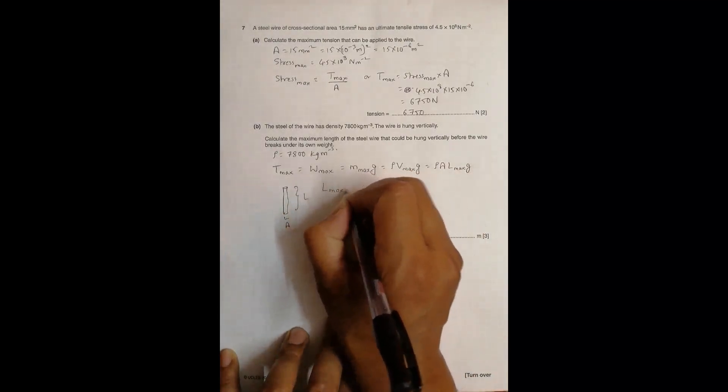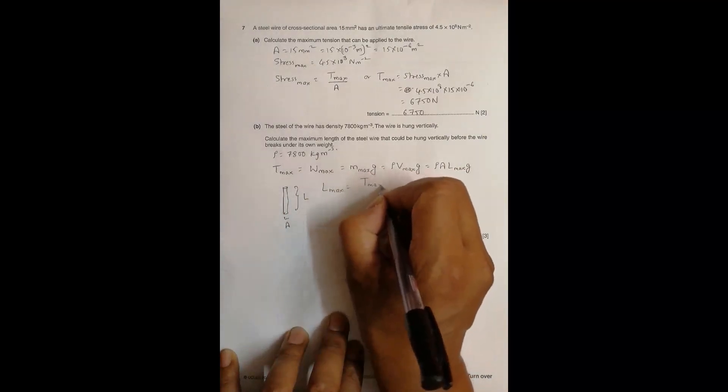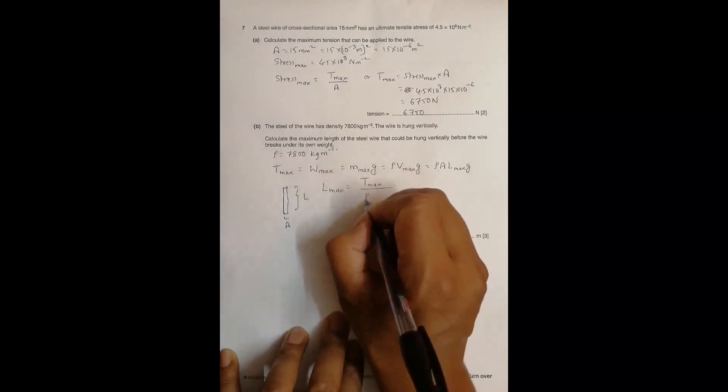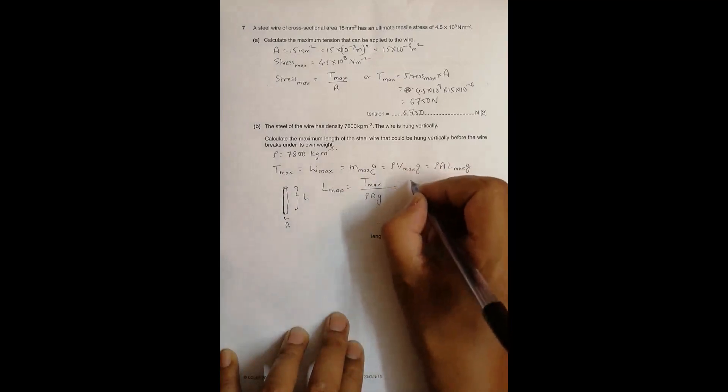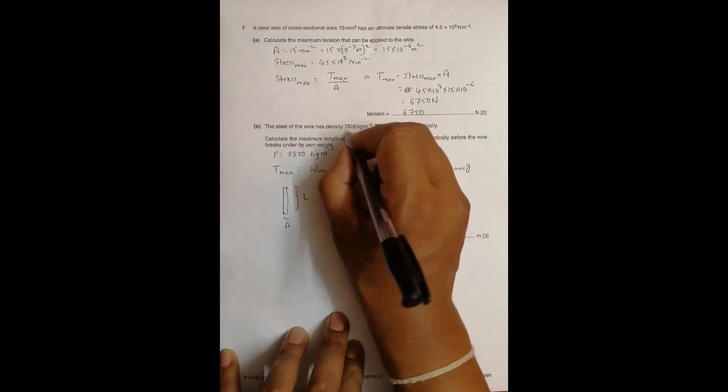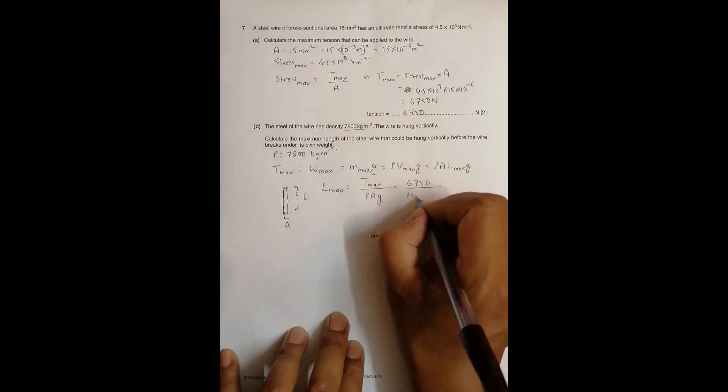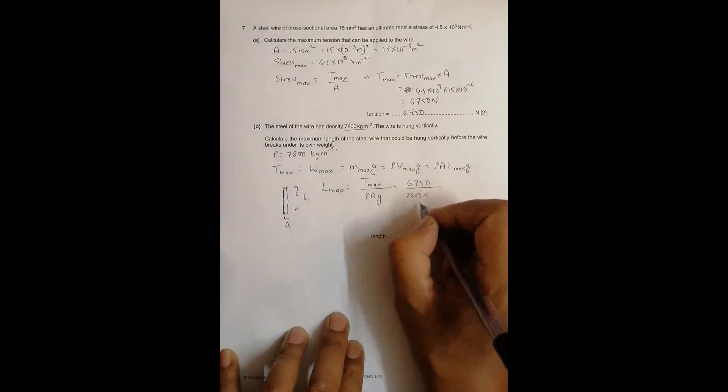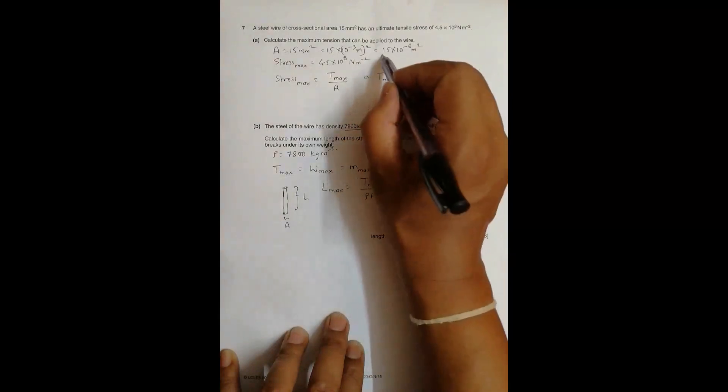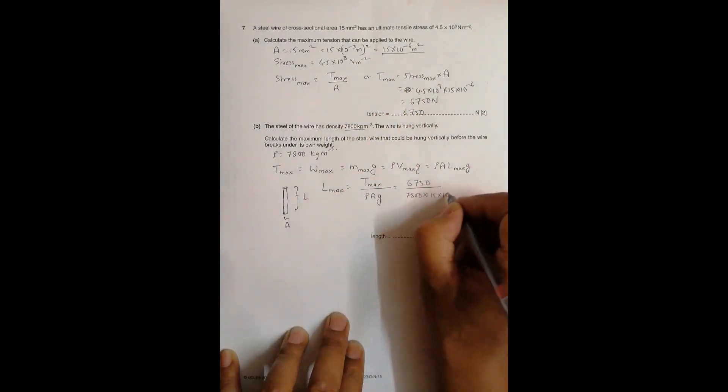So we should have L max is equal to T max divided by rho A g, which will be equal to T max is 6750 Newton, divided by rho which is 7800, times the cross-sectional area which is 15 times 10 to the power minus 6, times g.